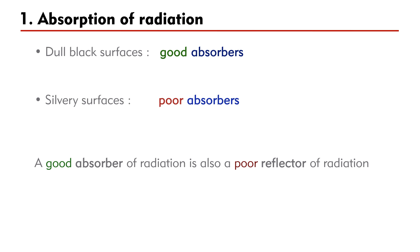A good absorber of radiation is also a poor reflector of radiation. Therefore, black surfaces are poor reflectors. Silvery surfaces are good reflectors.